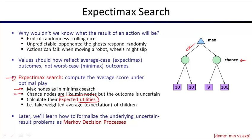The max nodes are the same as before. Chance nodes replace the min nodes, the outcome is uncertain, and you calculate their expected utilities — which for now just means averaging the numbers below that node.